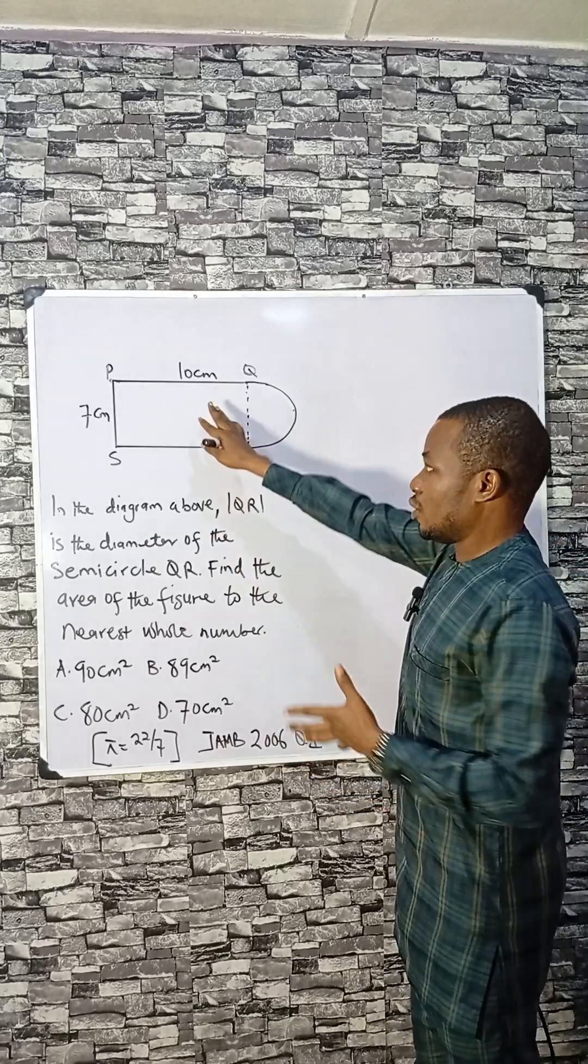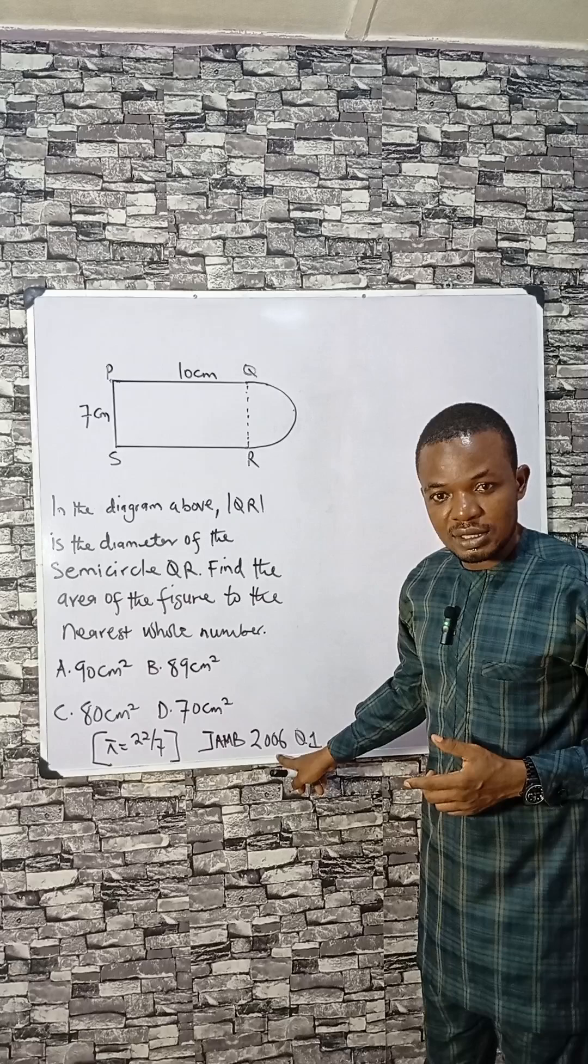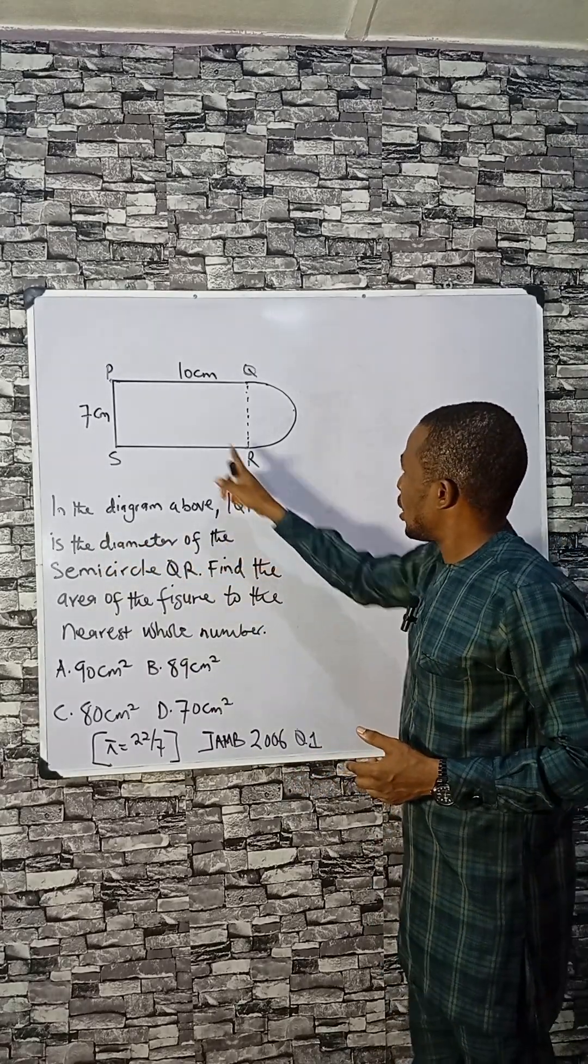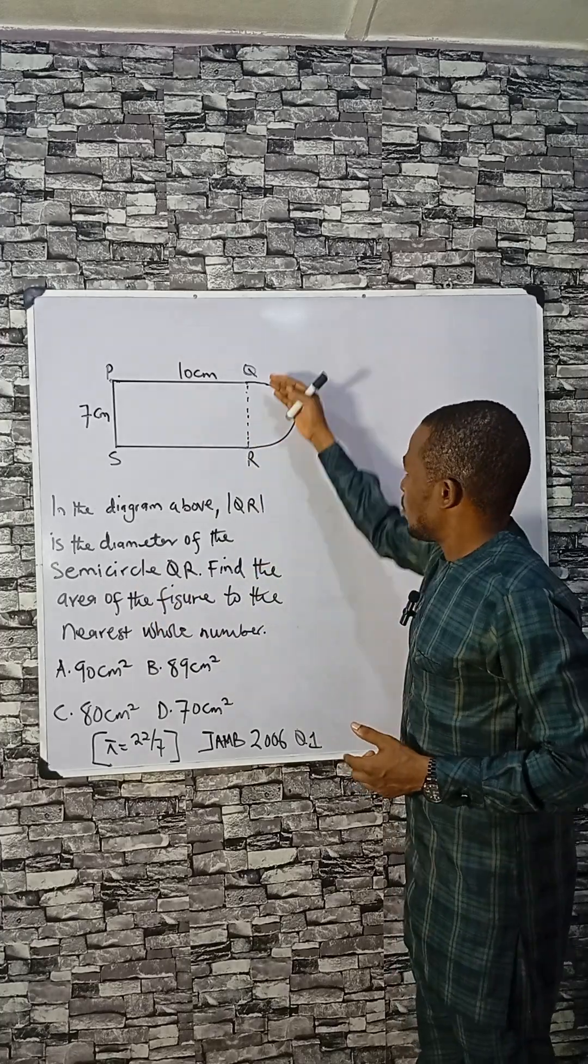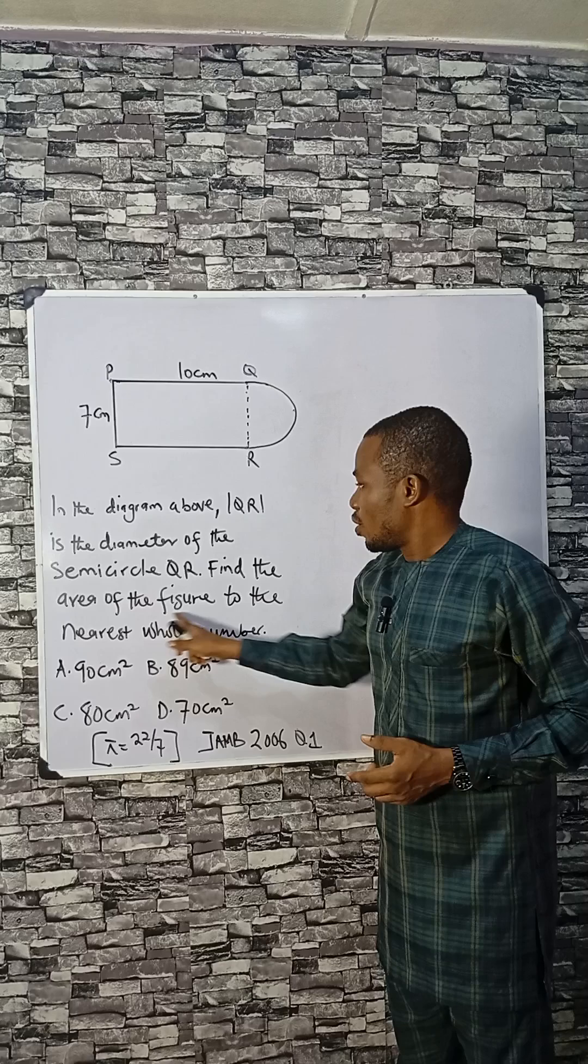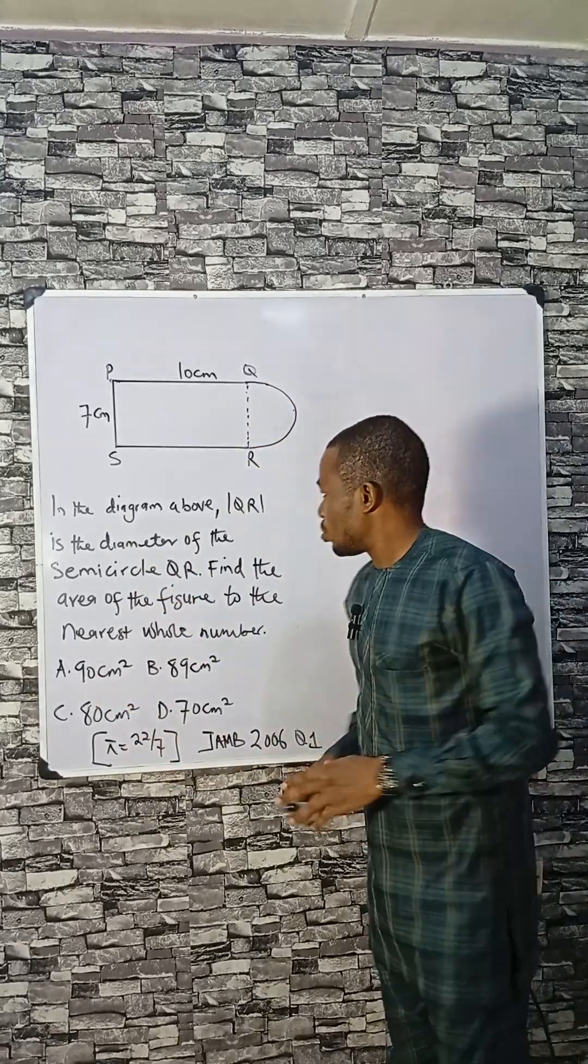Let's calculate the area of this figure. This is from UTME 2006, question number 1. In the diagram above, QR is the diameter of this semicircle. Find the area of the figure to the nearest whole number. Here are the options.